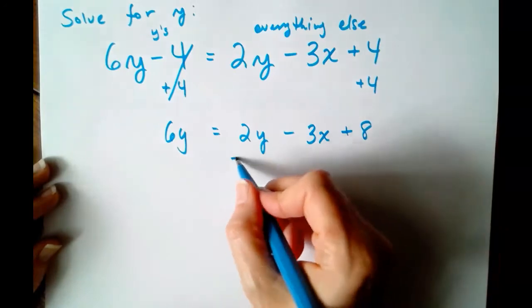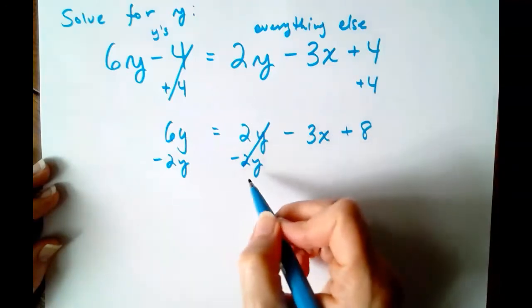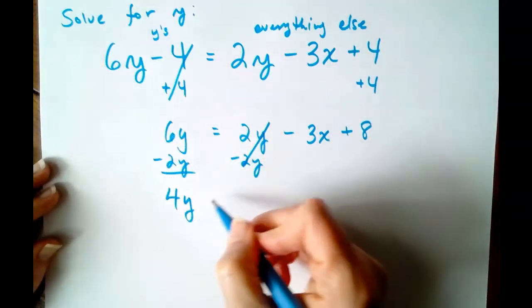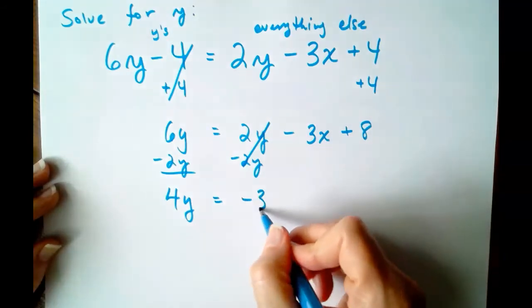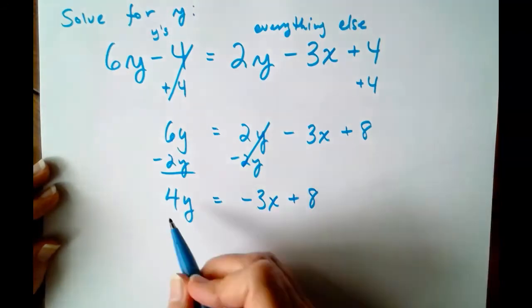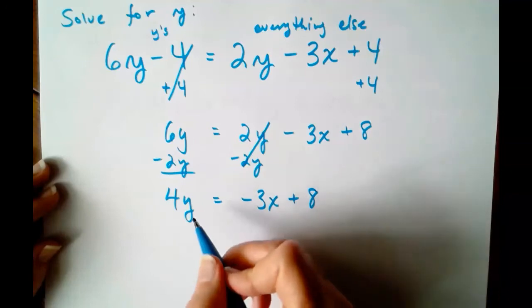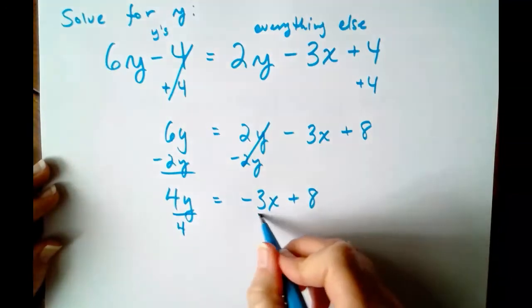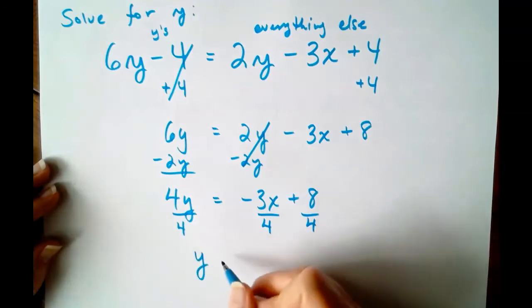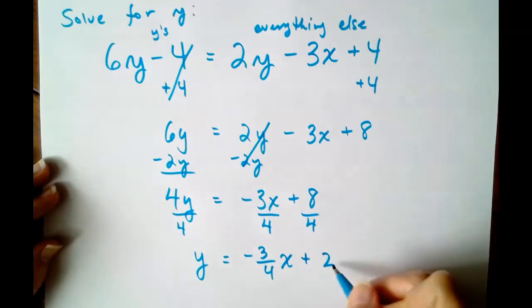Next, minus 2Y minus 2Y. I'm keeping my equal signs lined up. I'm showing all my steps. 6Y minus 2Y is 4Y equals negative 3X plus 8. Last step, this is 4 times Y. The inverse operation of multiplication is division. Divide by 4, divide by 4, divide by 4. So Y equals negative 3 fourths X plus 2.